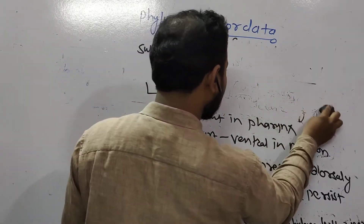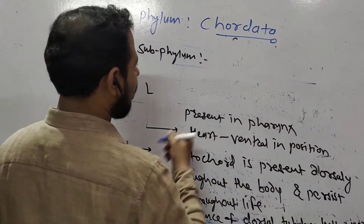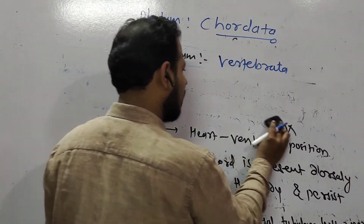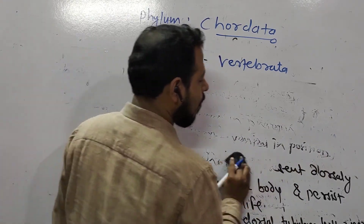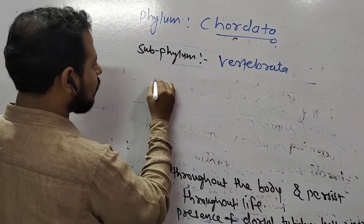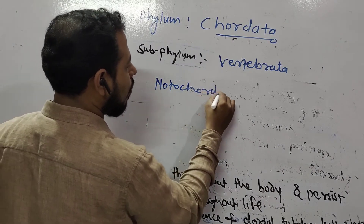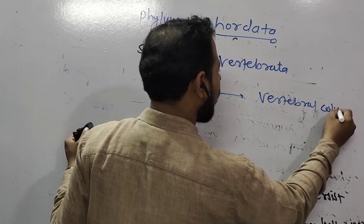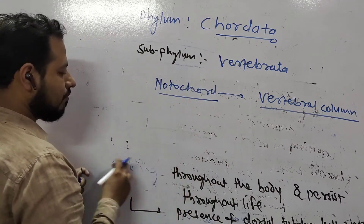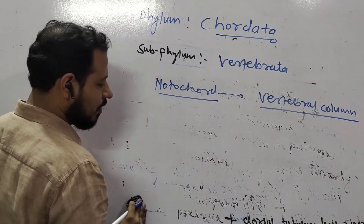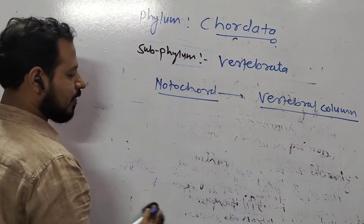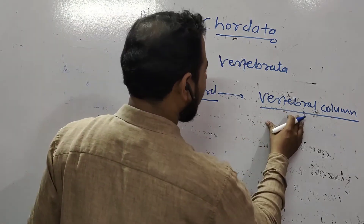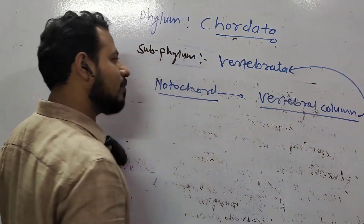After Protocordates comes subphylum Vertebrata. Vertebrates are so called because their notochord is transformed into a vertebral column. The vertebral column protects the spinal cord and supports the body. That is how the name Vertebrata originated — notochord is converted to vertebral column.